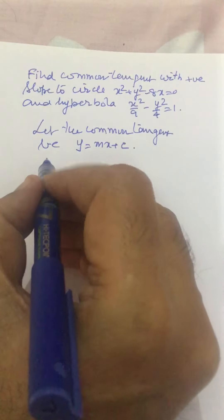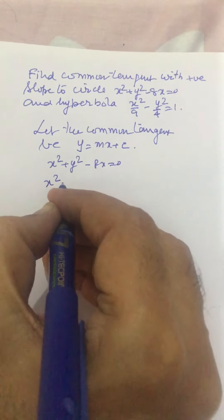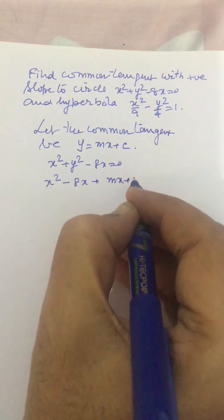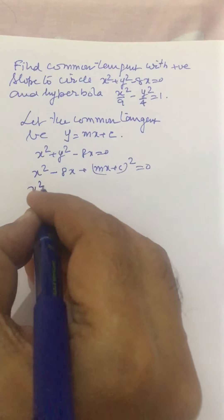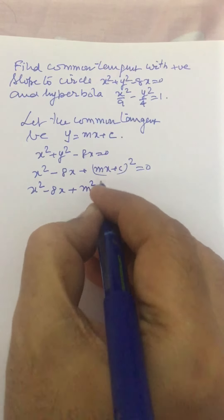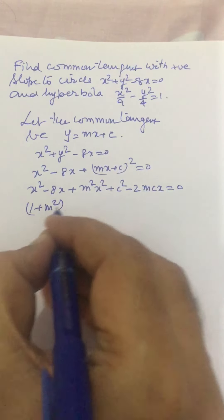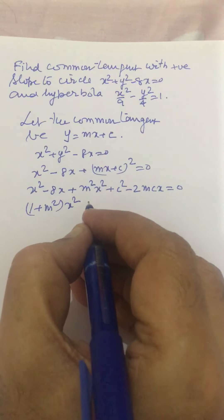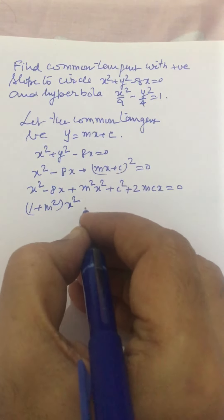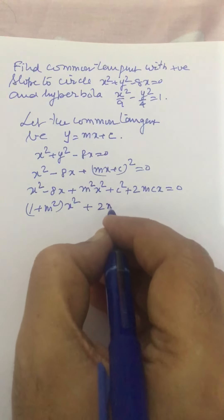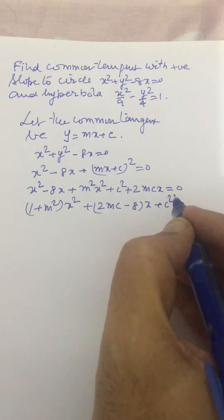We put y = mx + c into the circle equation x² + y² - 8x = 0. Substituting and expanding, we get (1 + m²)x² + (2mc - 8)x + c² = 0.